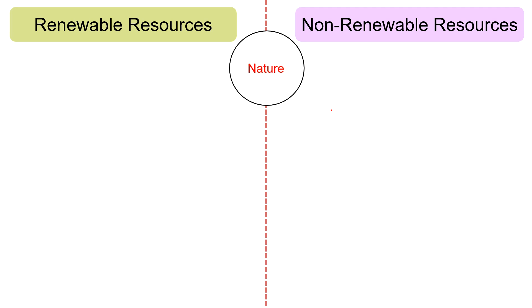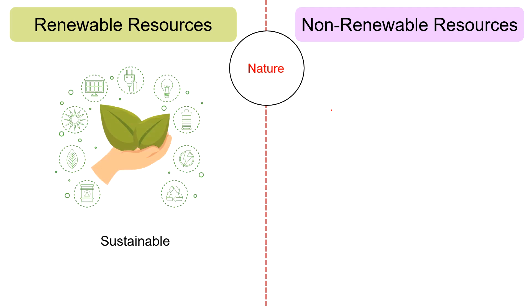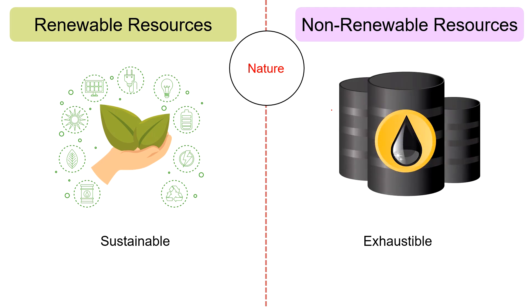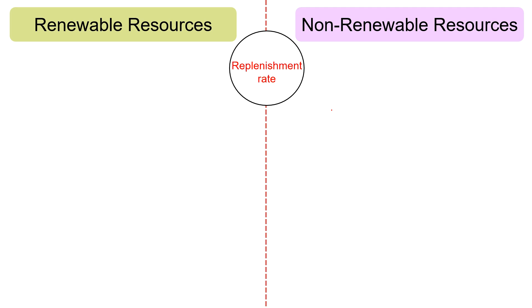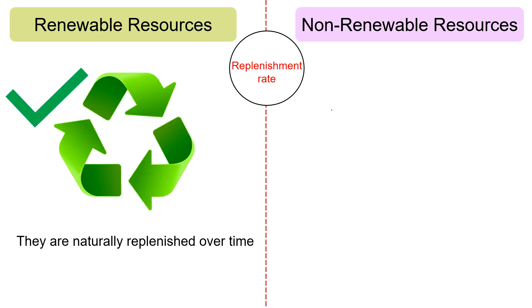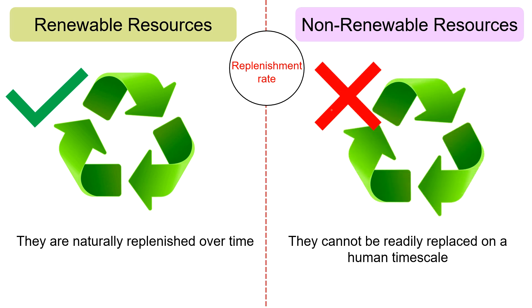Regarding nature: renewable resources do not become extinct easily, so they are sustainable in nature. Conversely, non-renewable resources deplete over time — they are exhaustible in nature and can be depleted when prone to large-scale consumption. Regarding replenishment rate: renewable resources can be naturally replenished over time, either through natural process or human intervention. Whereas non-renewable resources are finite substances that cannot be readily replaced on a human time scale.